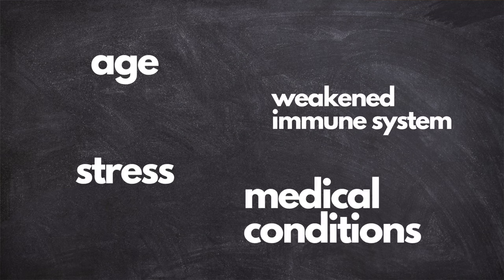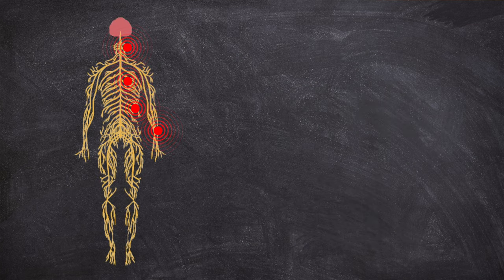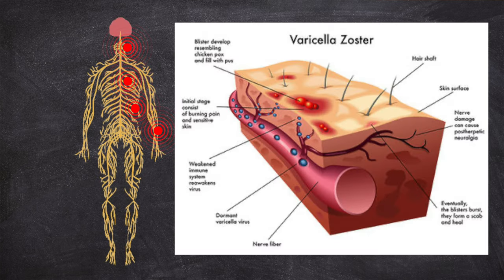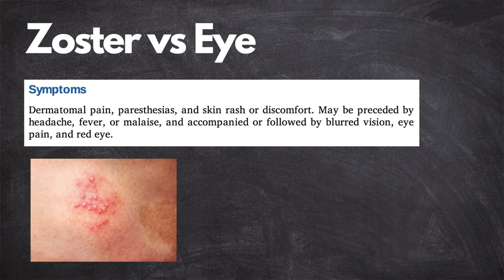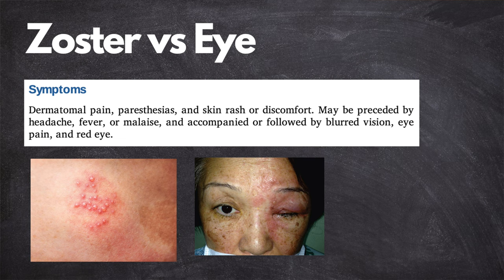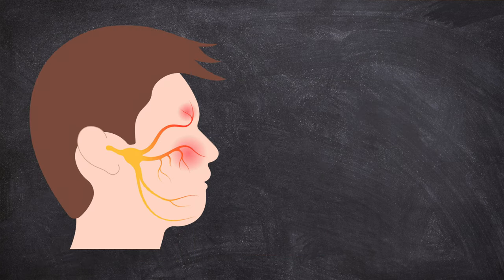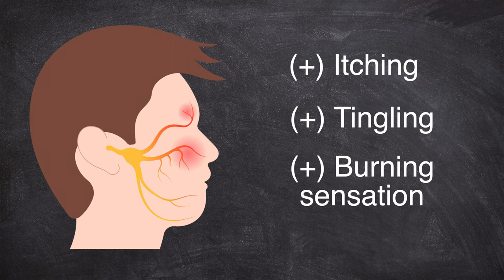The exact cause of herpes zoster reactivation is not fully understood, but factors such as age, weakened immune system, stress, and certain medical conditions can increase the risk. The reactivated virus travels along the nerve pathways, causing inflammation and pain in specific areas of the body. The most common symptom is a painful rash that usually appears as a band or cluster of blisters on one side of the body, following the path of a specific nerve, accompanied by itching, tingling, or a burning sensation.